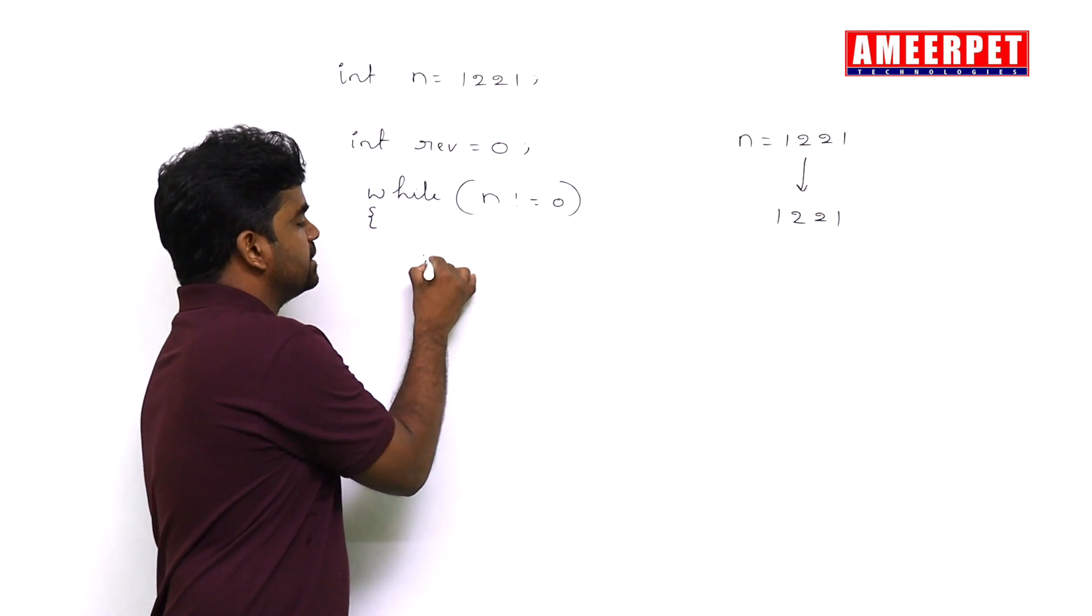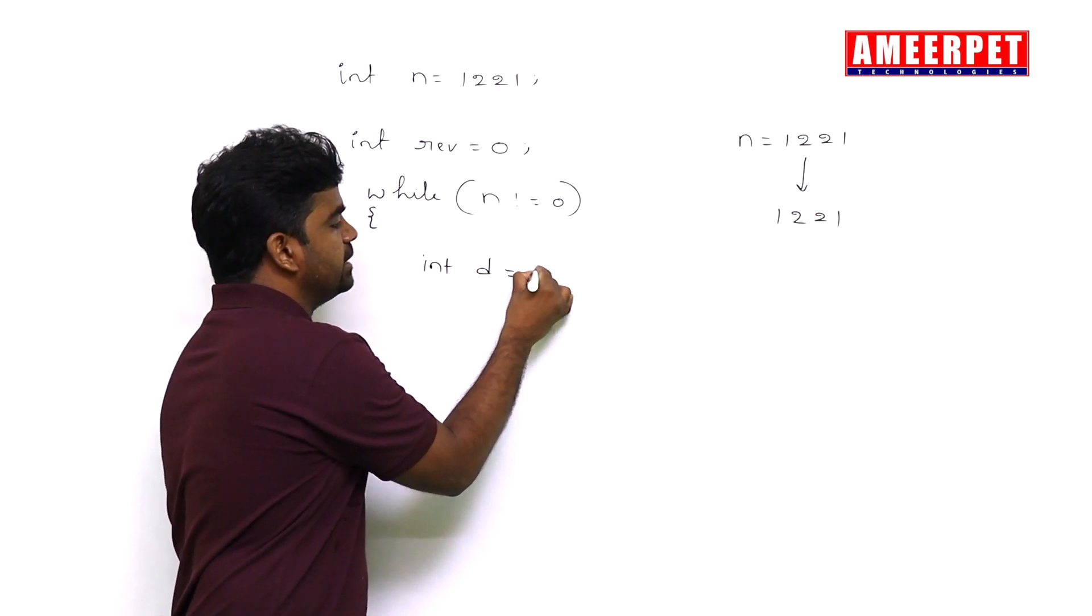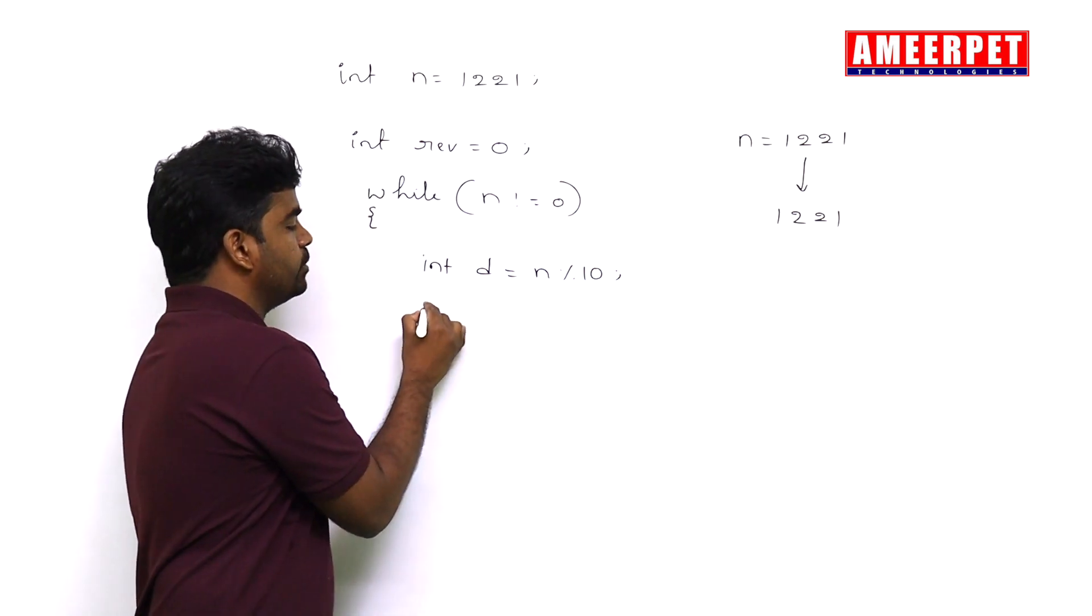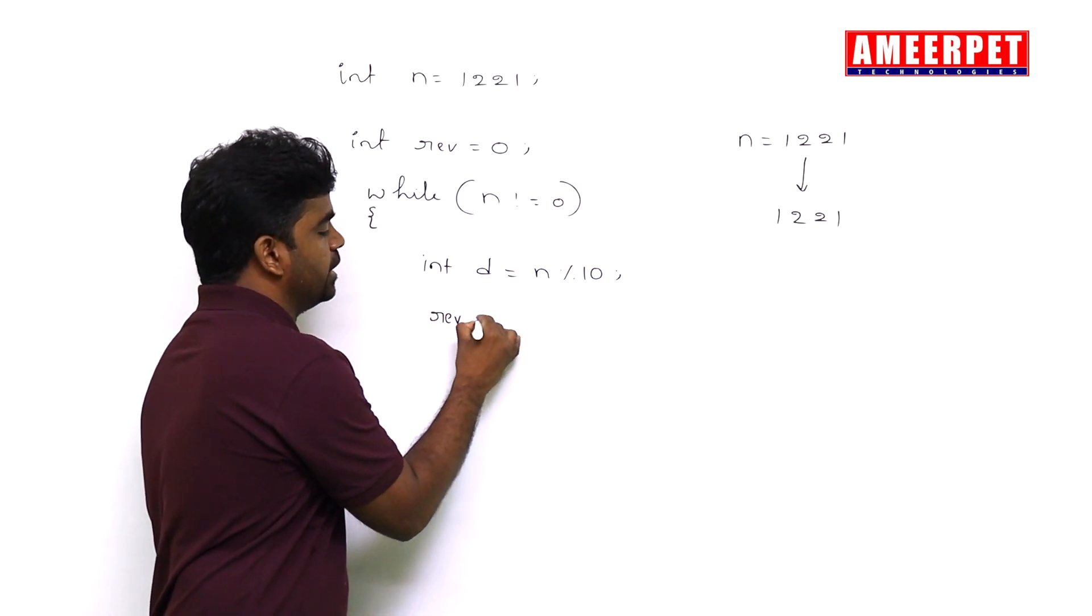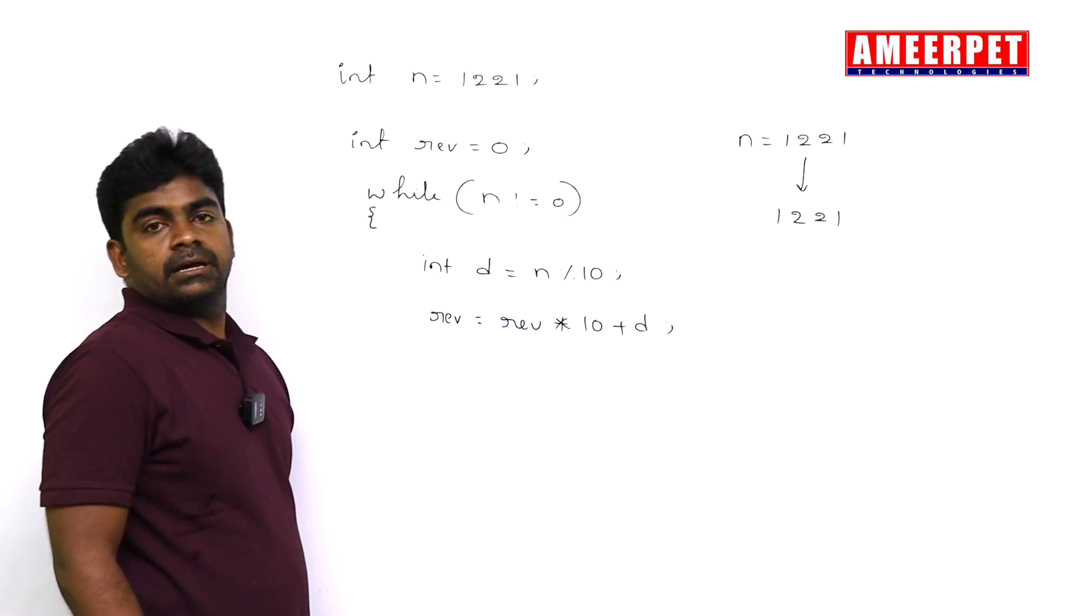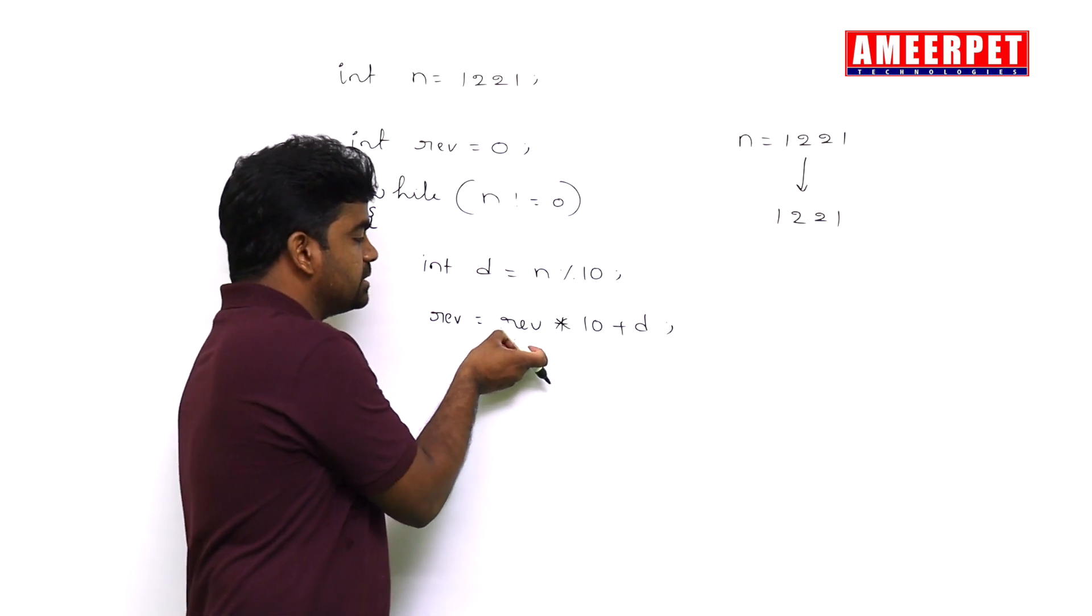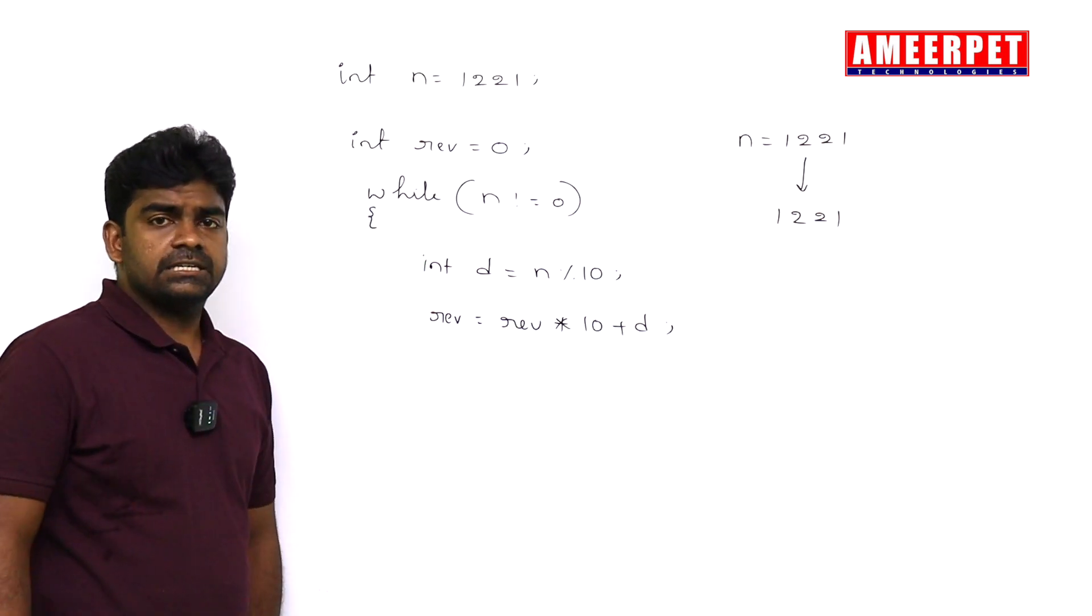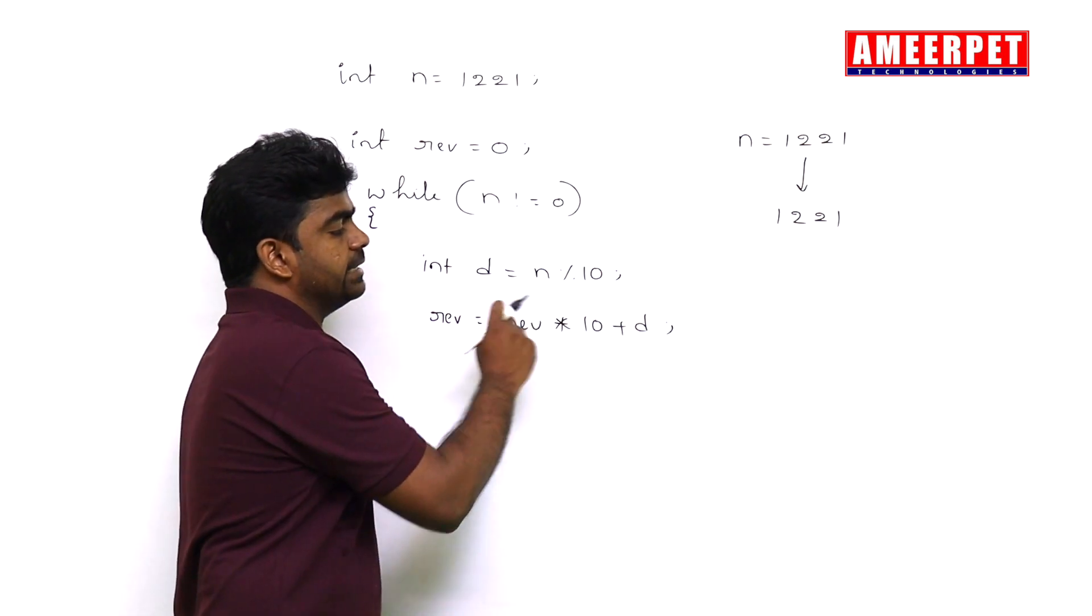We need to get the last digit every time. Int d equals n mod 10, and then we perform the operation reverse equals reverse into 10 plus d. This calculation we have already completed in the last video, so just follow the last video if you have not completed it.